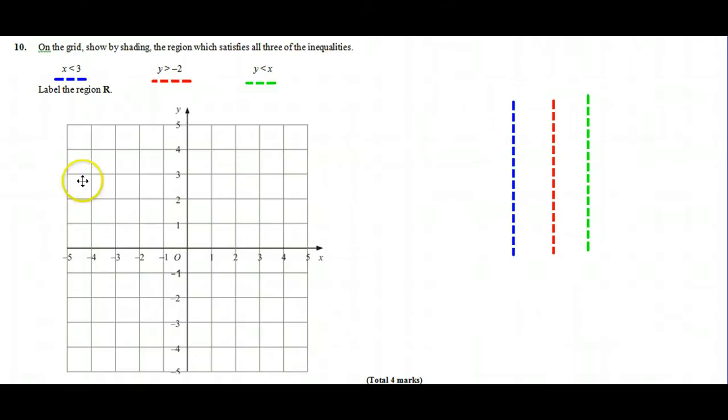Now, they're all dotted lines, not just by accident, but because all of the inequalities are less than or greater than signs. If they were less than or equal to, it would be a solid line because it would include the 3 in this case.